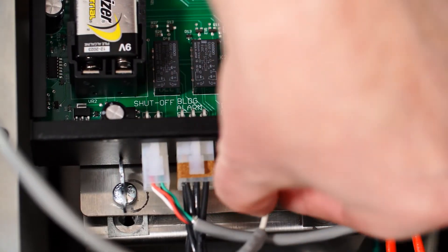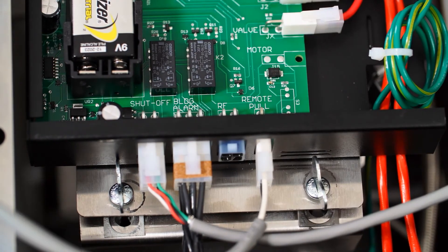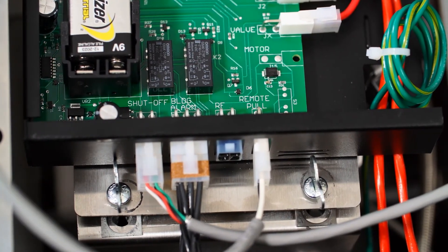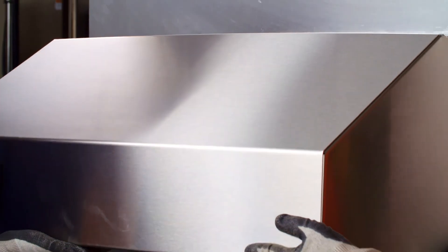Connect the test tool to the two-pin connector labeled remote pull on the control board. Alternately, you can use the remote pull station if the hood was supplied with one. Raise the hood back to its normal location.